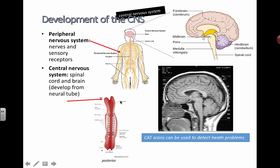The central nervous system develops from the neural tube. Here you have an image of neurulation towards its final stages, and you can see that this groove right here is going to close up. Here's the anterior part — remember the words anterior, posterior, dorsal, and ventral.